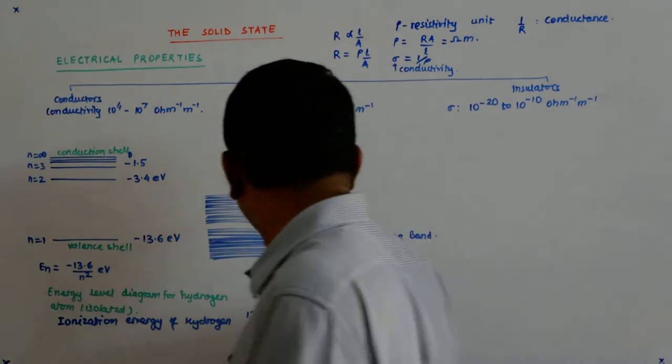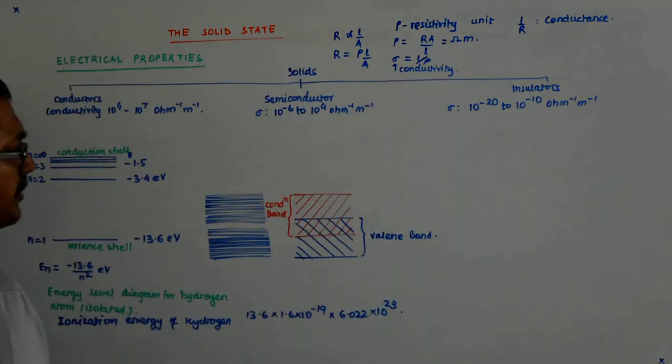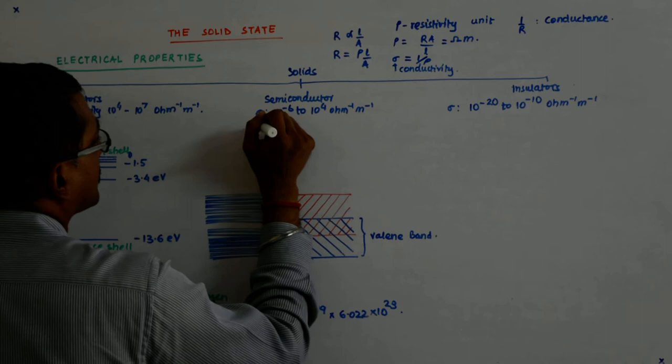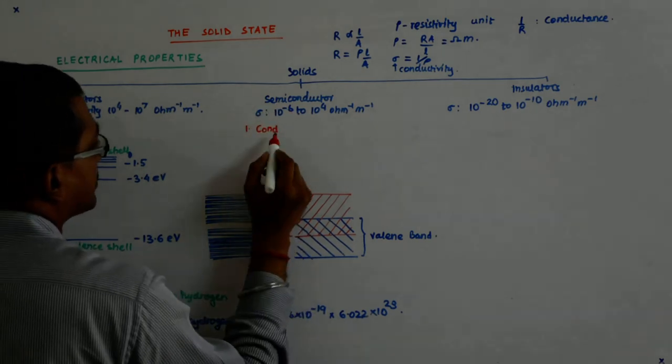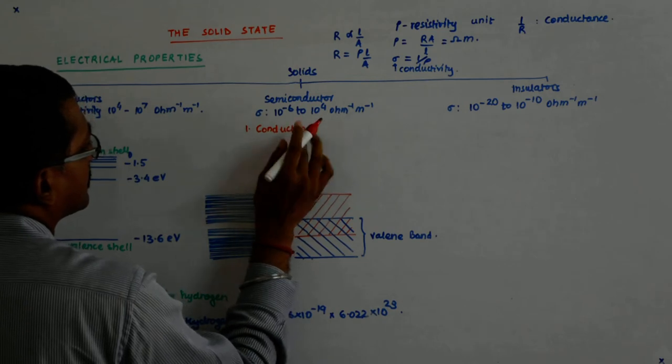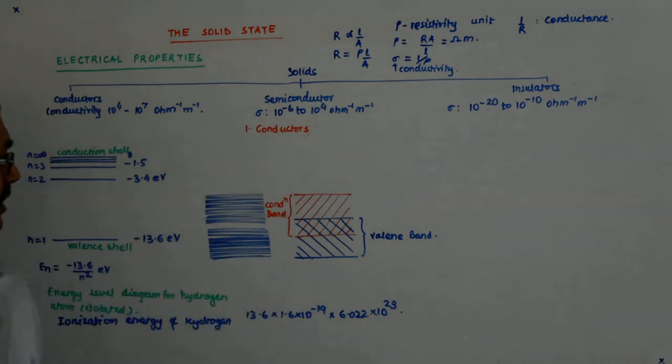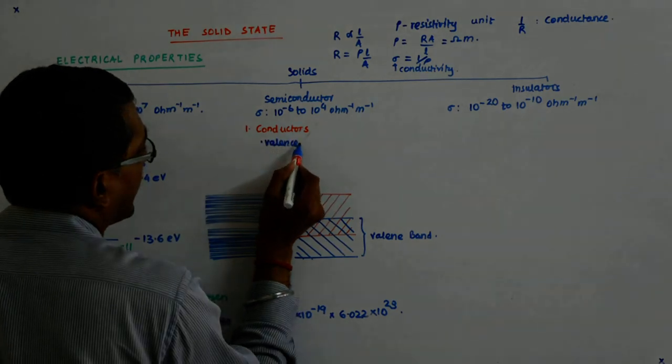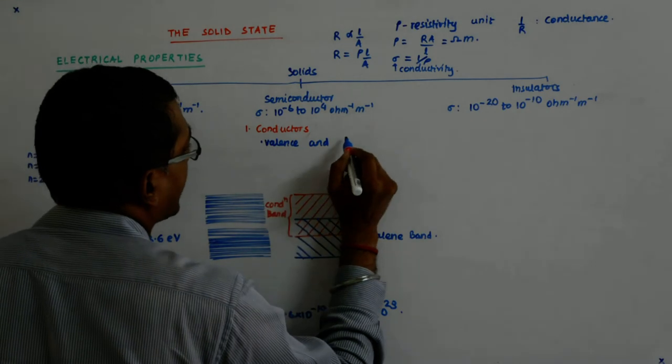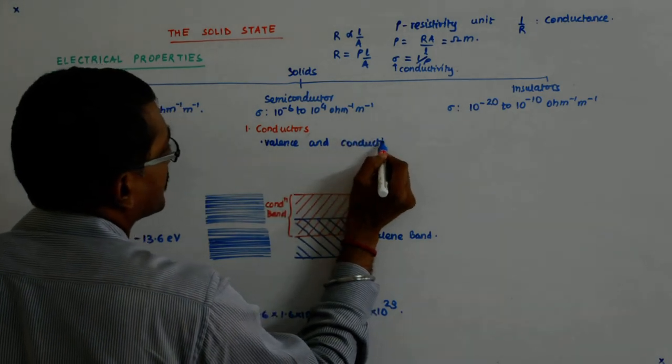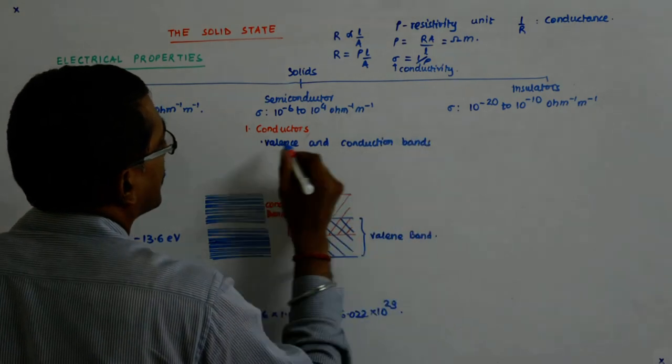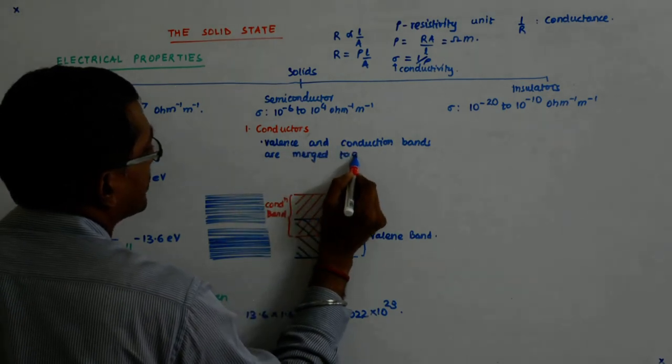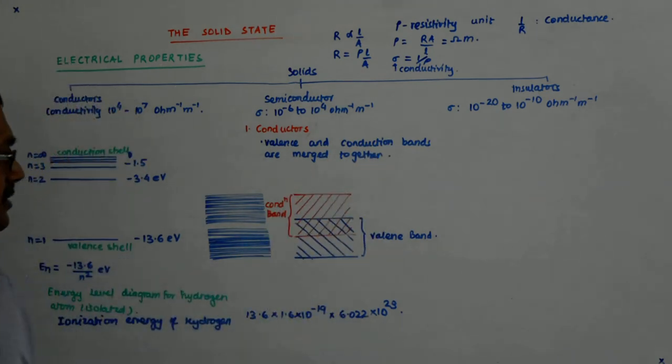Now, since the overlap, what happens in conductors? In conductors, the valence and the conduction bands are merged together. They are merged together. So what happens is, even at room temperature, there are so many electrons that are available, that are free to move under the influence of electric field.